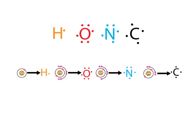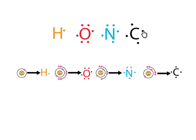So why does that work? The reason it works, as you can probably see here, is hydrogen can form one bond because it needs one more electron to fill its outer shell. Oxygen has two lone pairs, so it can form a bond here and here, so oxygen can form two bonds. Nitrogen has a lone pair at the top, so it has three single electrons, so nitrogen can form three bonds. And lastly, carbon has four valence electrons, so it can form a total of four bonds.